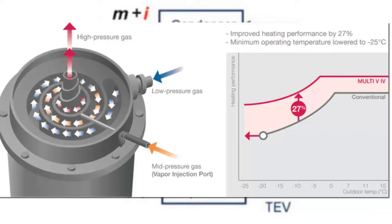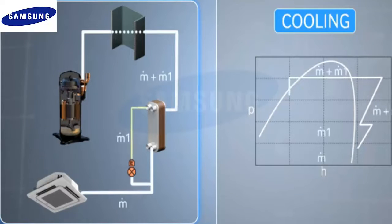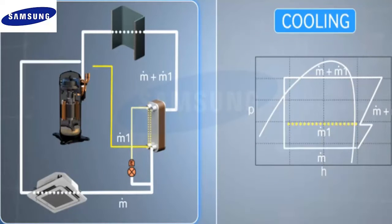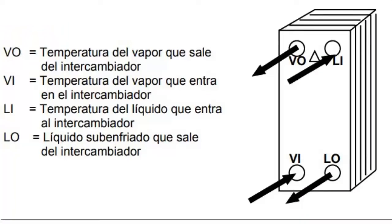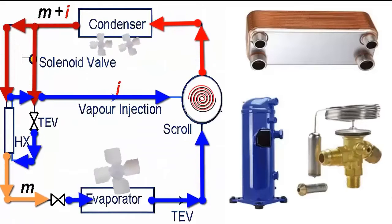This cycle offers numerous advantages, including greater cooling capacity and a better coefficient of performance (COP) compared to conventional cycles. Vapor injection technology is particularly effective at low evaporation temperatures, where greater capacity and efficiency are required.